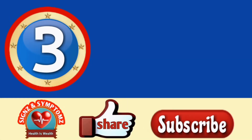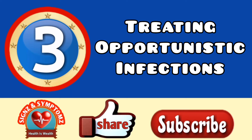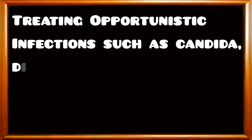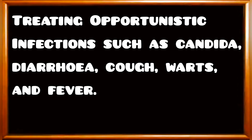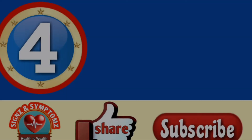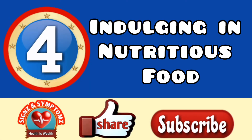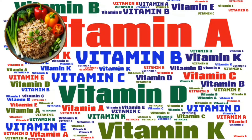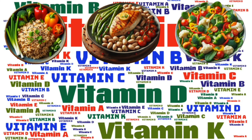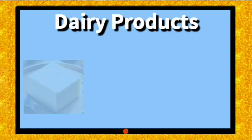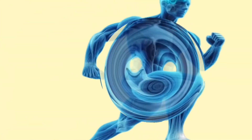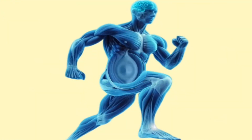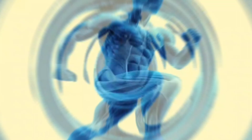3. Treating opportunistic infections such as candida, diarrhea, cough, warts, and fever. 4. Indulging in nutritious food. Eating a healthy, balanced diet helps prevent weight loss and strengthens the body against the effects of opportunistic infections.